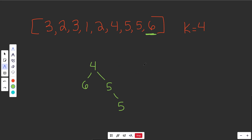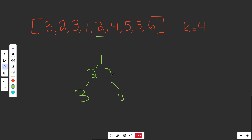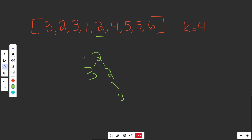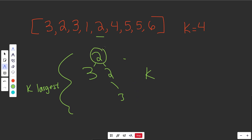Why does this work? The heap is stuck at size k. It's a min heap, so the smallest of those k elements is at the top. We are keeping the k largest elements we've seen so far. If you take the k largest things and look at the smallest of them, that's exactly the kth largest thing. Progressing through the whole array, you'd again see that 4 would be your kth largest answer.